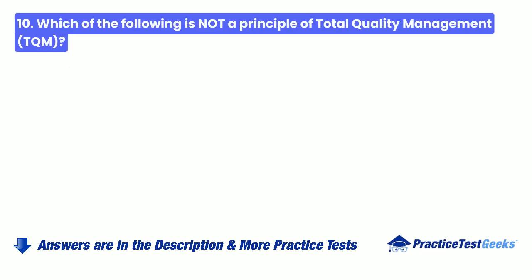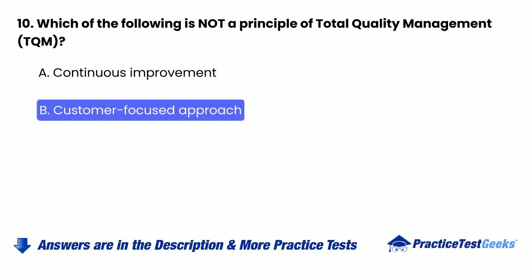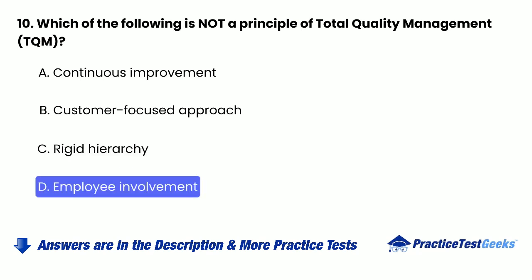10. Which of the following is not a principle of total quality management (TQM)? a. Continuous improvement. b. Customer-focused approach. c. Rigid hierarchy. d. Employee involvement.